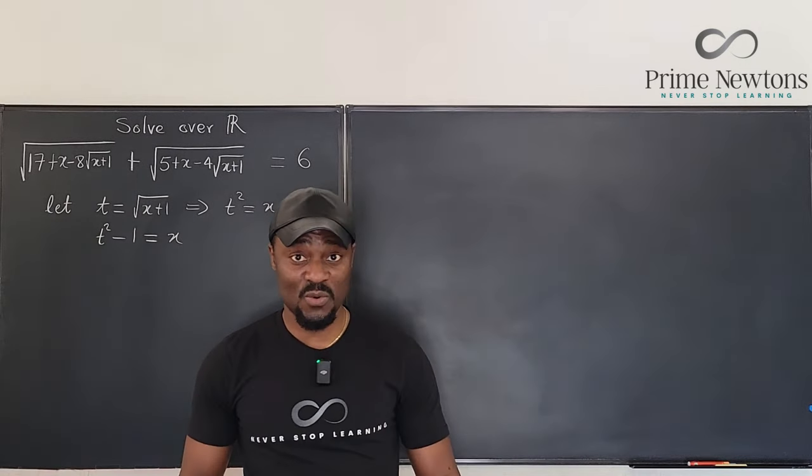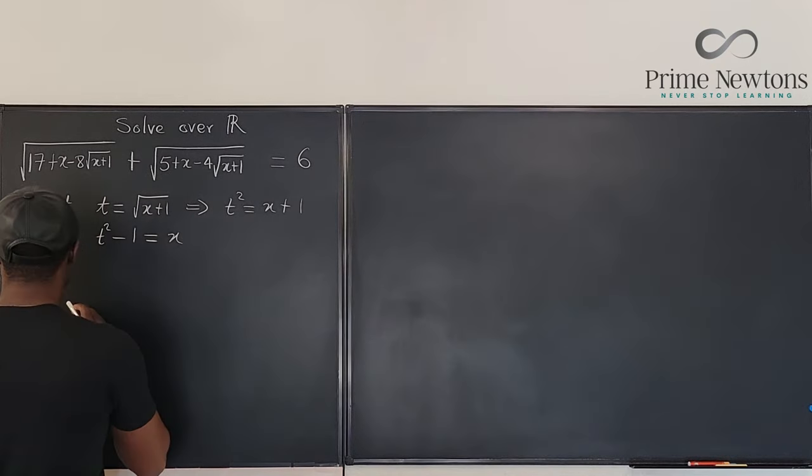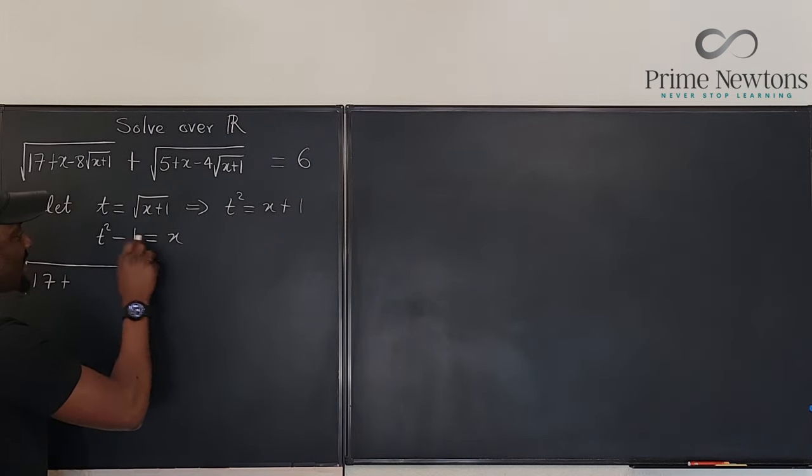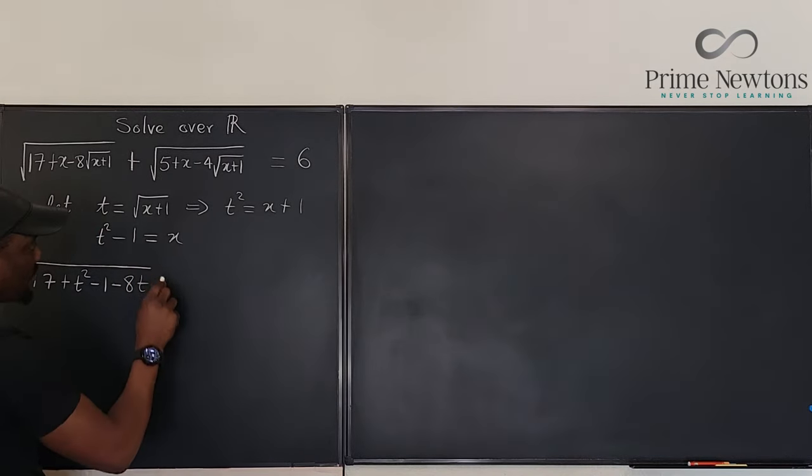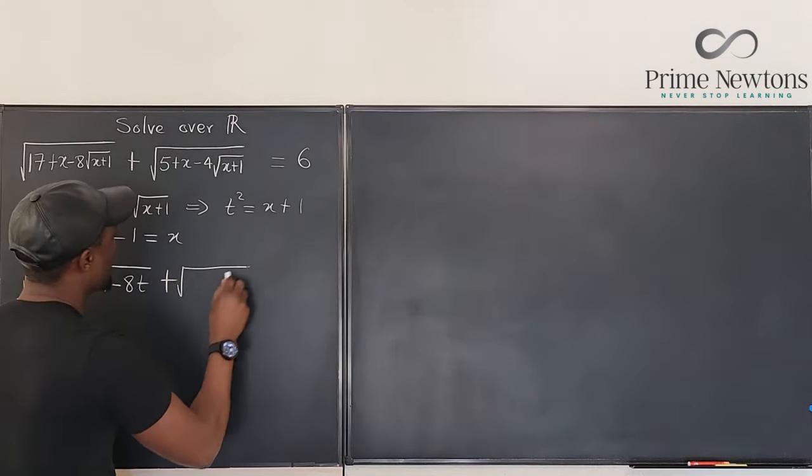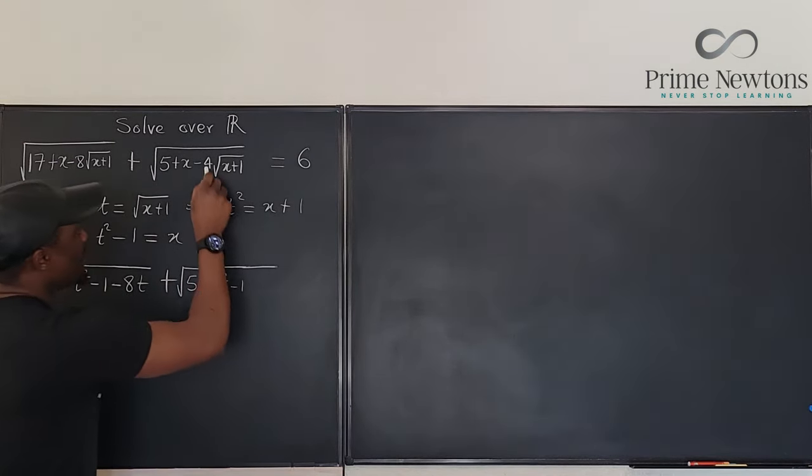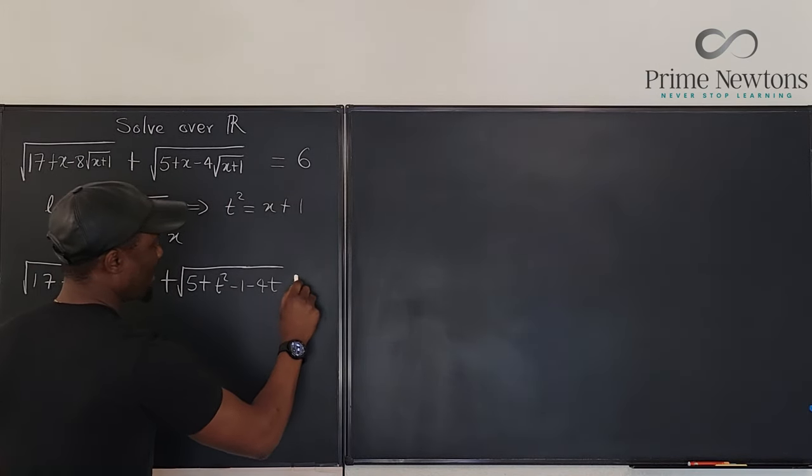I went back to the question and did all the replacements. On the left hand side we have the square root of 17 plus t squared minus one minus eight times the square root of x plus one, and the other one is going to be five plus t squared minus one minus four t, ultimately equal to six.